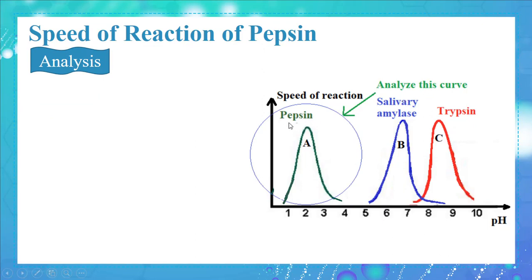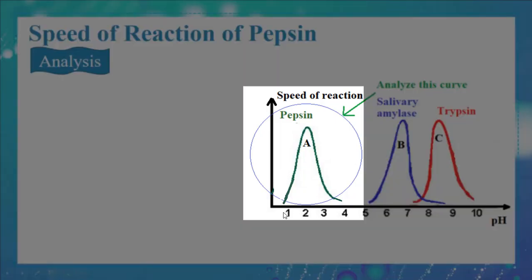We will start by analyzing the curve related to the speed of reaction of pepsin. At pH equal to 1, the speed of the reaction was negligible — it is null. When the pH became 2, the speed of the reaction increased to the maximum. When the pH increased to 4, the speed of the reaction decreased until it became null again.